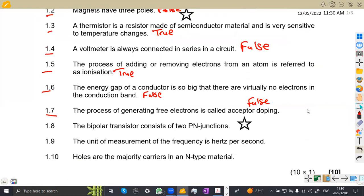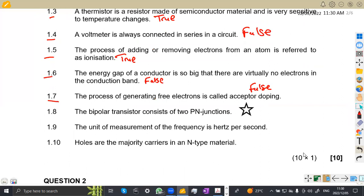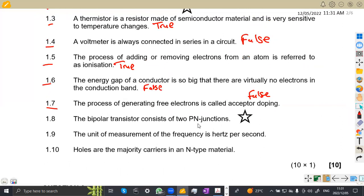Then we got 1.8, the bipolar transistor is called two PN junctions. That is, we are referring to the diodes there, the PN diodes. That is actually true. That's a transistor. So this is actually true.